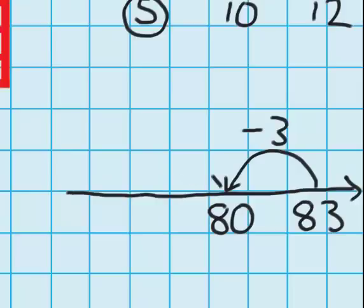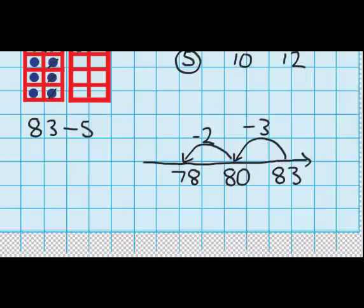Now, if I jump back 2 more, I will have jumped back 5. Because I'll have jumped back 3. Then I'll have jumped back another 2, which in total means I'll have jumped back 5. So, 80 minus 2 leads me to 78. So, that's my answer, 78. So, I'll write that in over there. 83 minus 5 equals 78.